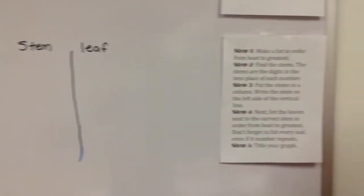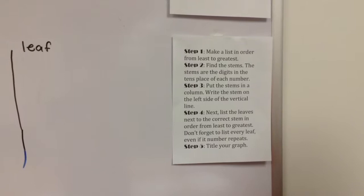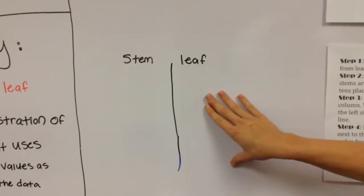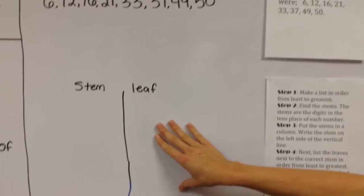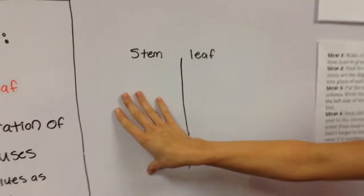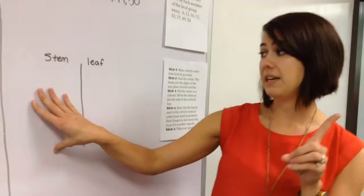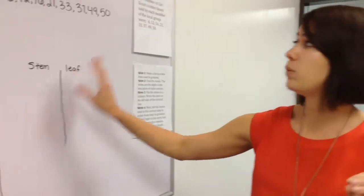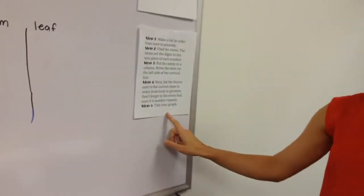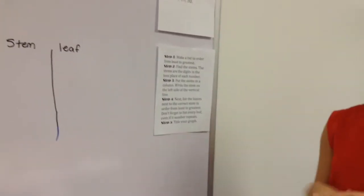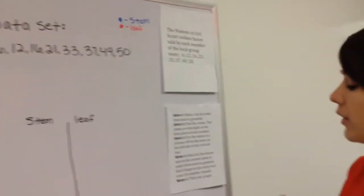Step four, next you're going to find your leaves, and you're going to put those in order from least to greatest. Your leaves can represent many times. Anytime they are shown and you have a value, you will represent that value every time. In your stem, the value only is represented one time. I will go into a little more detail of this when we actually start working into a problem. And our final step is step five, and you're going to title your graph. So let's keep those things in mind as we're working through our problem.